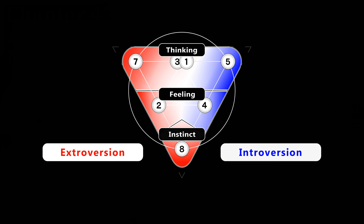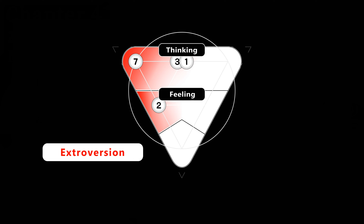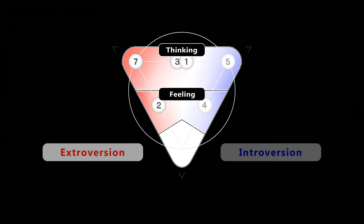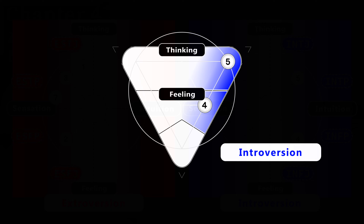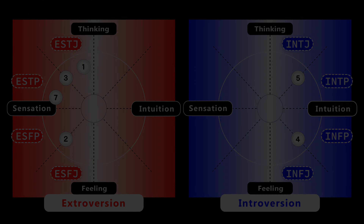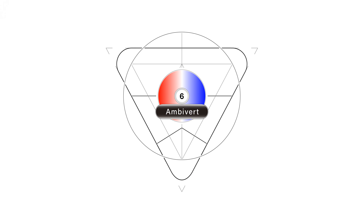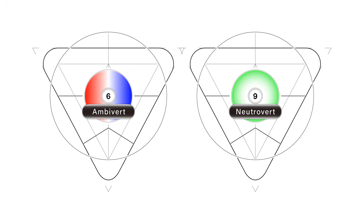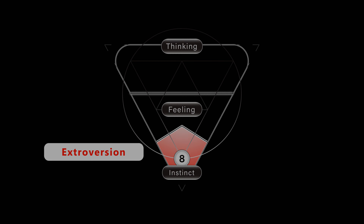Type 1, Type 3, Type 7, and Type 2 tend to be extroverted sensation types, and Type 5 and Type 4 tend to be introverted intuitive types. These six types will be discussed in Section 3. Type 6 tends to be ambivert, and Type 9 tends to be neutrovert — these two types will be discussed in Section 4. Type 8 tends to be the extroverted instinctive type, and this category does not perfectly fit into the traditional framework of MBTI theory. This category will be discussed in Section 5.